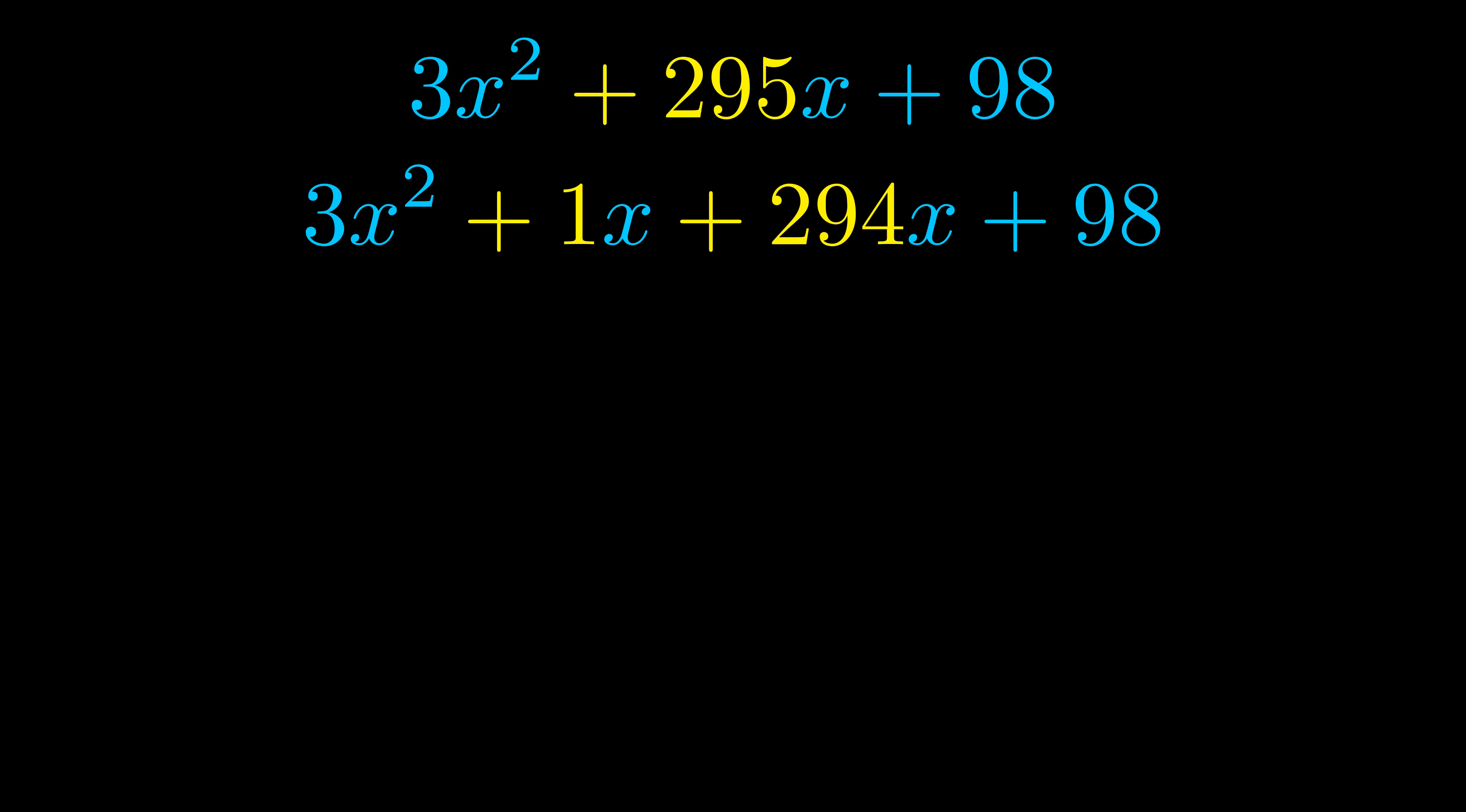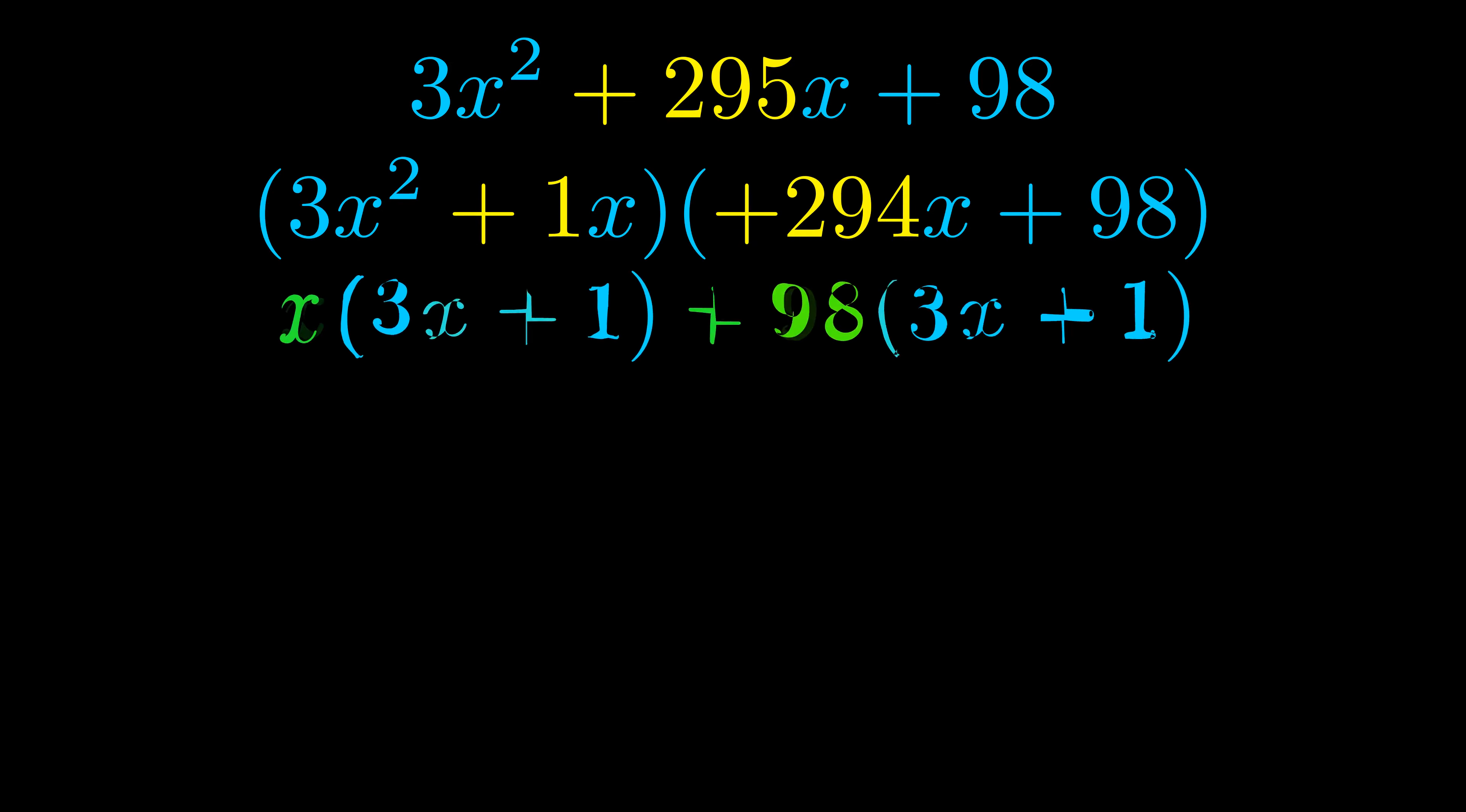Once we've done this we go ahead and we put parentheses around the first term and the last term. And we do that so that we can take the greatest common factor out of both terms. We can see the greatest common factor is now outside in green.